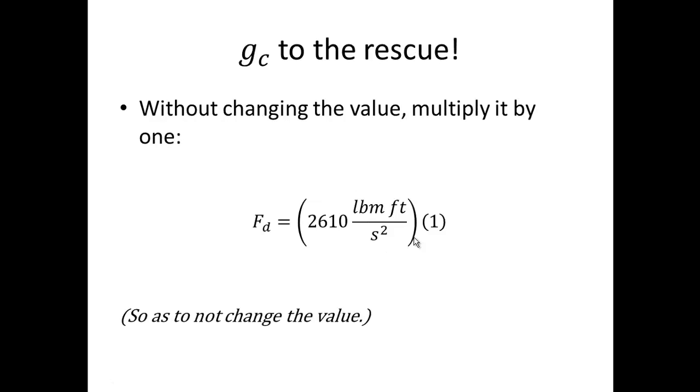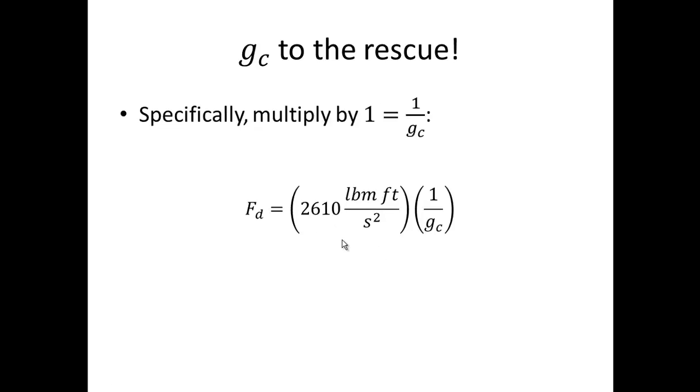So this is where the g sub c comes to the rescue. Without changing the value we multiply by 1. We multiply the 2610 pound mass feet per second squared by 1, specifically we multiply by 1 equals 1 over g sub c.